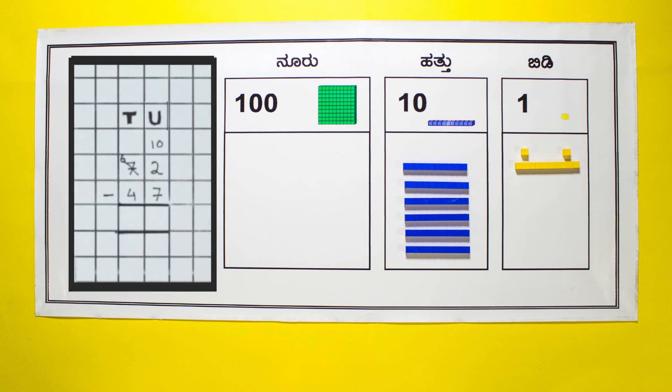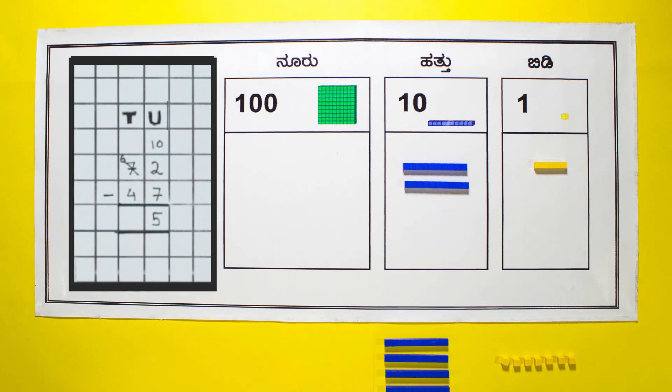The regrouped 10 units plus the existing 2 units adds up to 12 units. Take away 7 yellow cubes and keep them below the mat. There are 5 units left on the place value mat. Next move one step to the left. We have 6 tens left in the minuend. Subtract 4 tens and keep it below the mat. 2 blue rods are left on the place value mat.